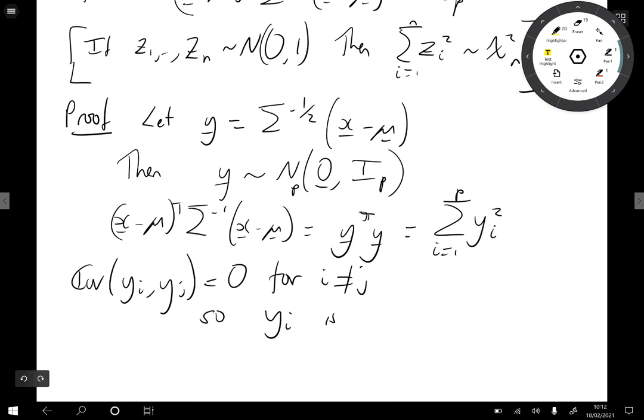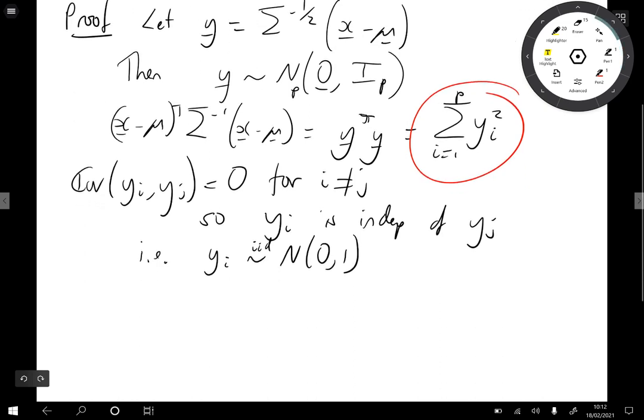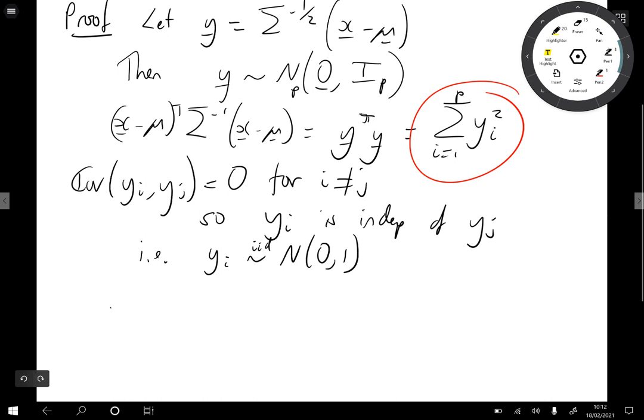So yi is independent of yj. So this is a sum of independent normal (0,1) random variables. i.e. yi are iid normal (0,1) random variables. And so the sum of them squared has chi-squared p distribution. Which proves what we wanted to prove.